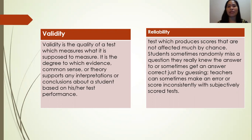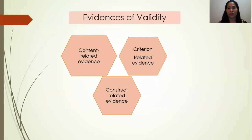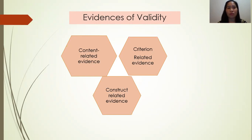Reliability refers to a test which produces scores that are not affected much by chance. Students sometimes randomly miss a question they really knew the answer to, or sometimes get an answer correct just by guessing. Teachers can sometimes make an error or score inconsistently with subjectively scored tests. In making inferences from the results of a selection procedure to subsequent work behavior or outcome performance, these should be based on evidences that will support the set inferences.